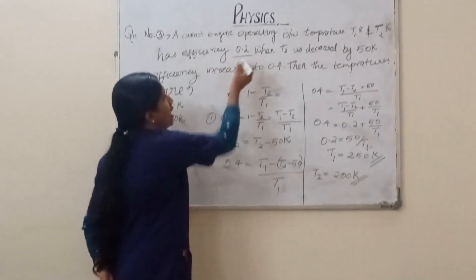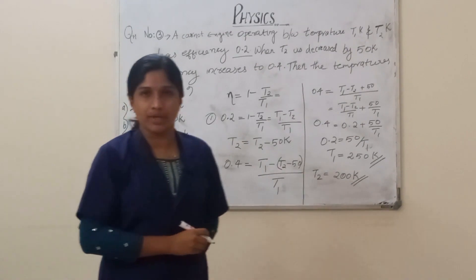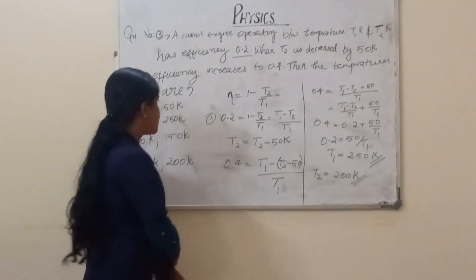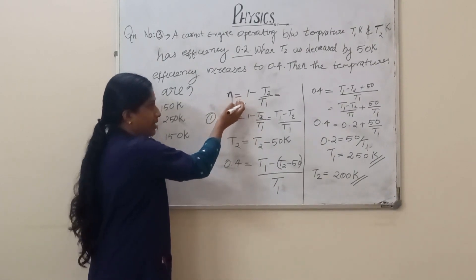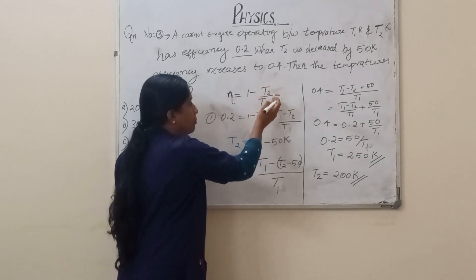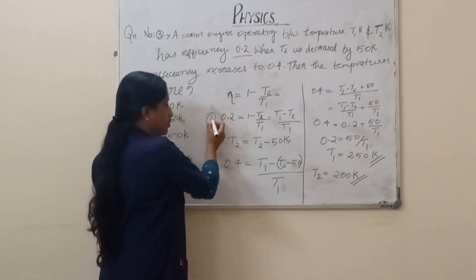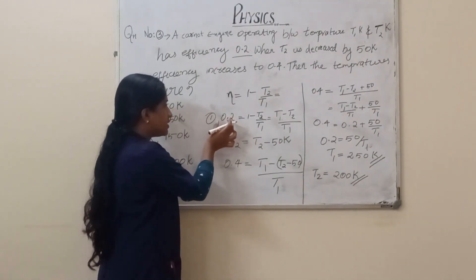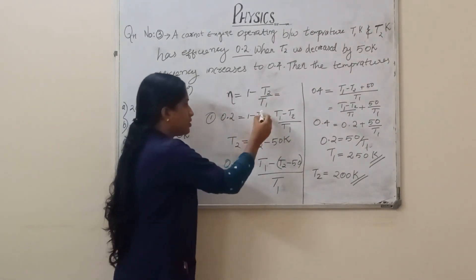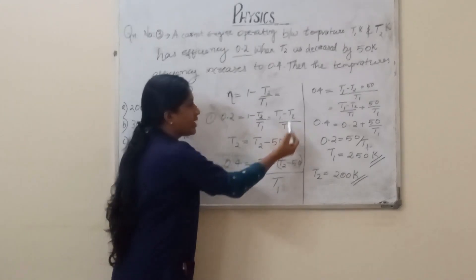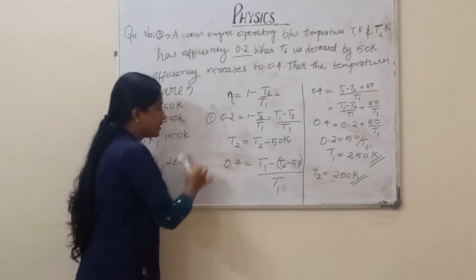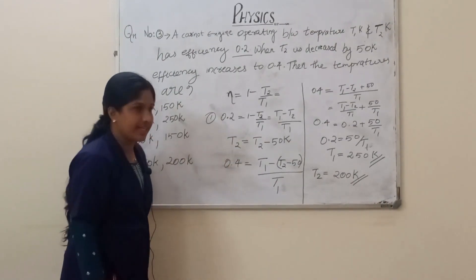The Carnot efficiency equation is: η = 1 − T2/T1. So in the first case, 0.2 = 1 − T2/T1. Cross-multiplying: T1 − T2 = 0.2 × T1.